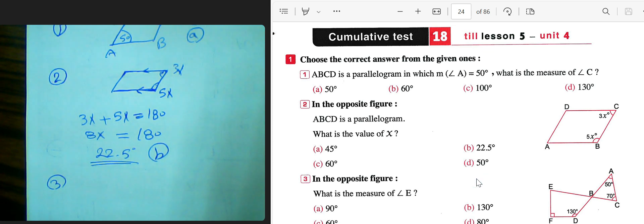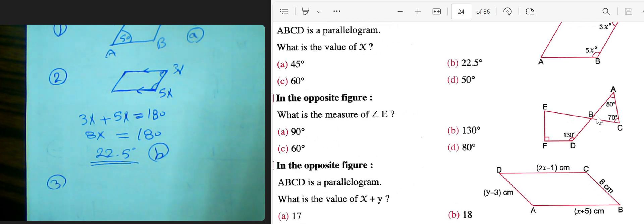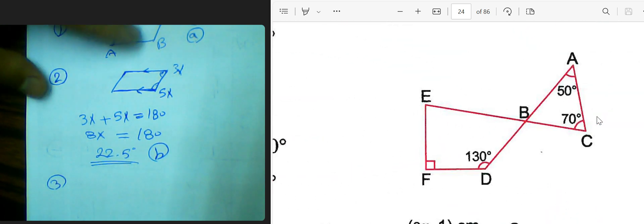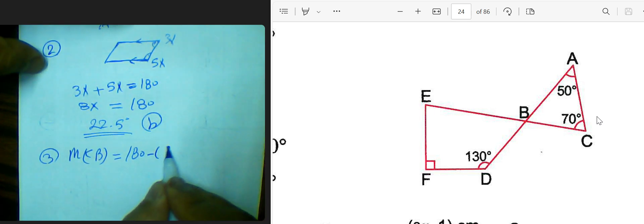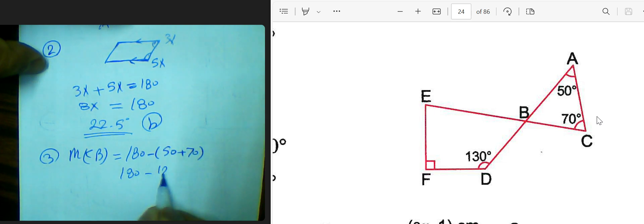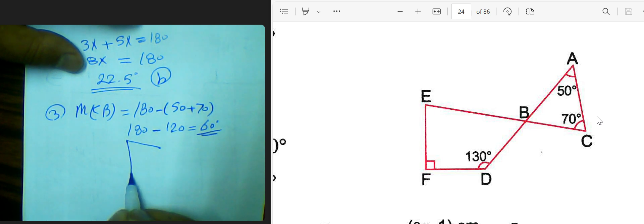In the opposite figure, find measure of angle B. First step we can find measure of angle B from the triangle. Sum of the internal angles in any triangle equals 180. Then you can find the measure of angle B equals 180 subtract by 50 plus 70, which will be 120 subtracted from 180. We can find the measure of angle E from the quadrilateral. We know sum of internal angles in the quadrilateral will be 360.